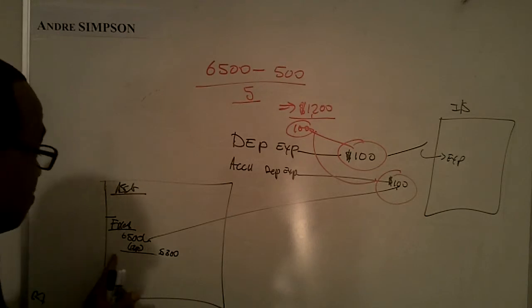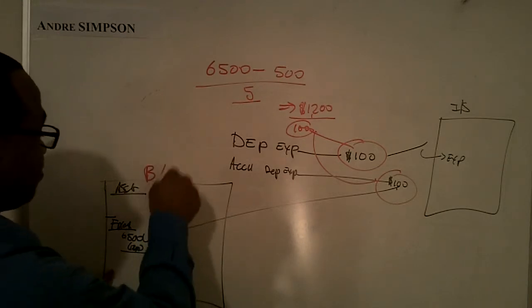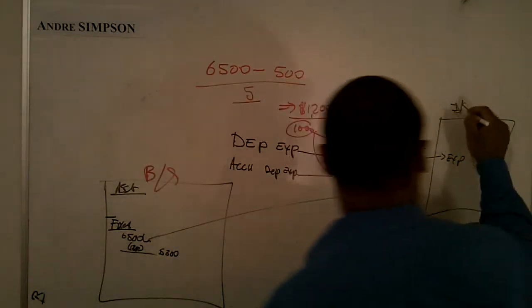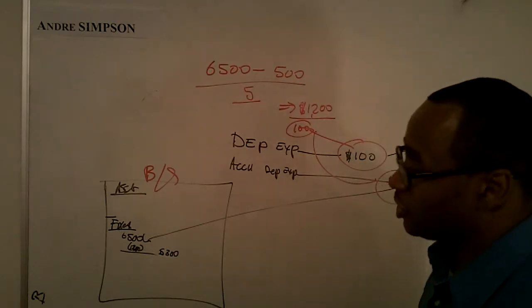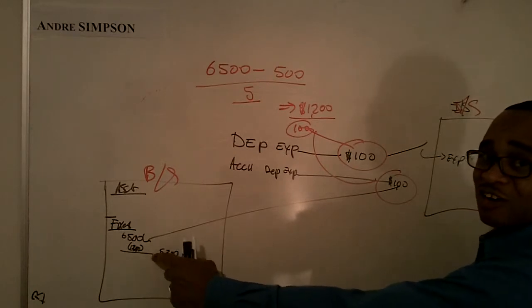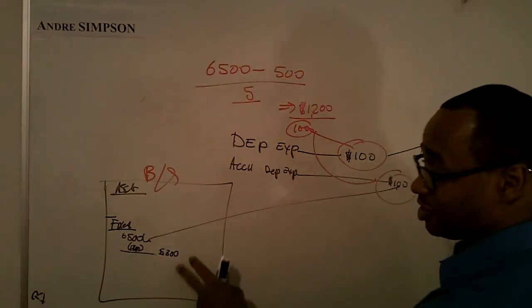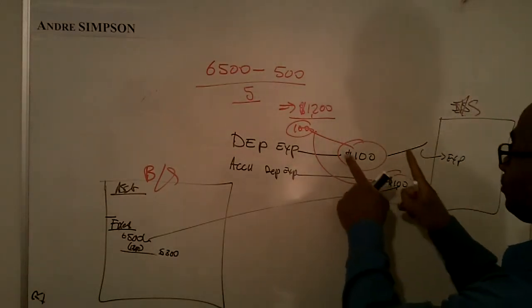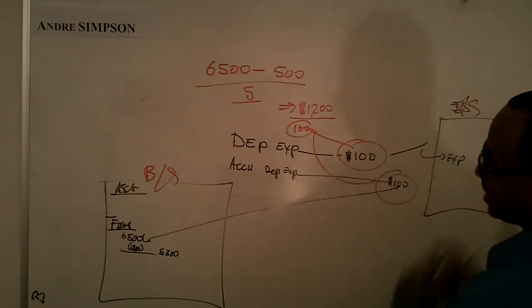Where is here? This is the balance sheet. This is the income statement. Accumulated depreciation reduces the value of the asset. It brings it down. Fixed assets are always shown net of depreciation on your balance sheet. This will go to your income statement as an expense.